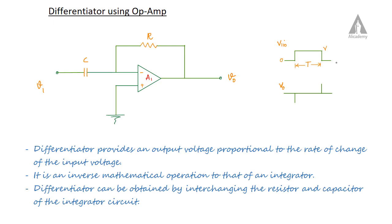A similar square wave input is given as V-in, and correspondingly we will get narrow spikes at the output. At the rising edge we get a positive spike and at the falling edge we get a negative spike.